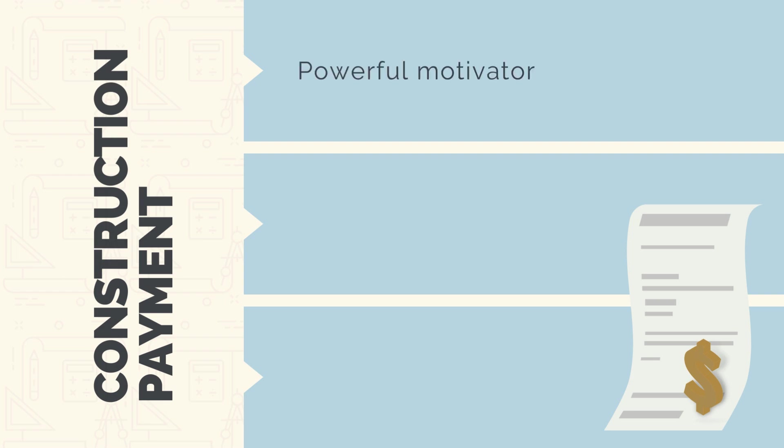Firstly, payment is a powerful motivator, meaning withholding and delaying payment is often used as a negotiating tactic, or ensuring payment is made only when works are completed can be a way of ensuring contractors complete their scopes. Another important concept to understand — and we'll talk more about this when we talk about payment terms — is the time value of money. Usually there are delays from when works are completed to when contractors receive payment. This requires contractors to make upfront payments before receiving payment from the principal. This time gap leads to them having to borrow money from the bank at higher interest rates, meaning there is a real cost to delayed payment.